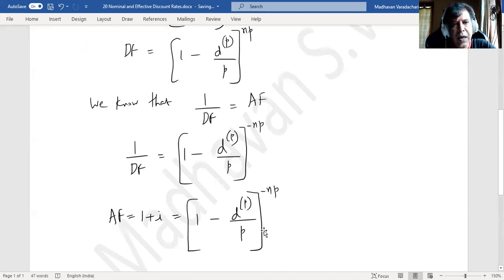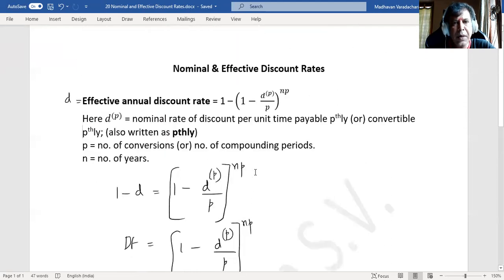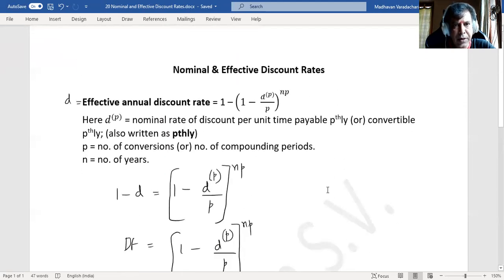We use this in case we have the discount available and we want to find out the effective interest rate. We can use this to find out what is i. We'll see some problems related to this in our subsequent videos.